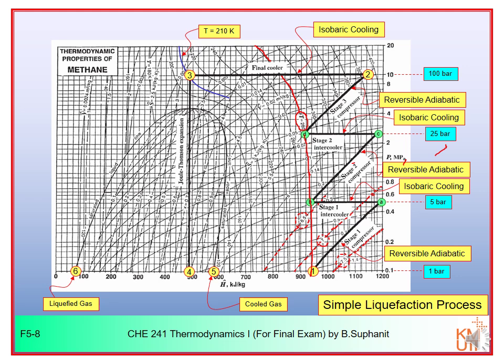Point A is at 5 bar. Then cooling in the first intercooler is isobaric, so you move horizontally to the exit temperature of 280 Kelvin — this is point B. From B, compress isentropically in the second stage to point C at 25 bar, then cool isobarically in the second intercooler to 280 Kelvin again — point D.